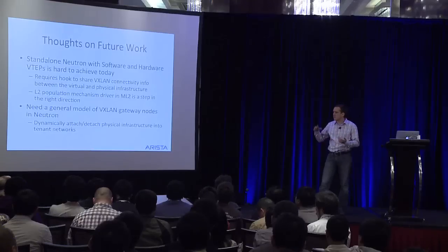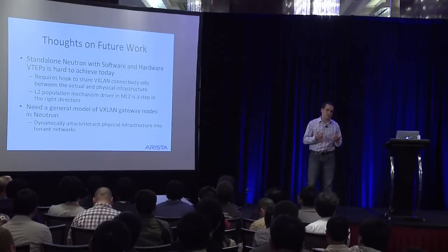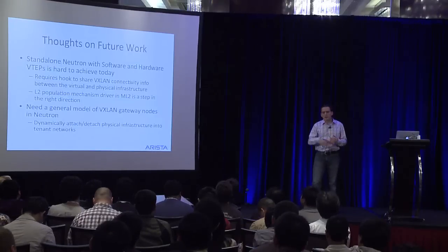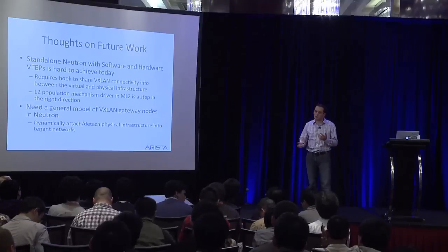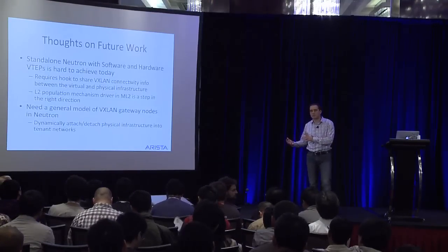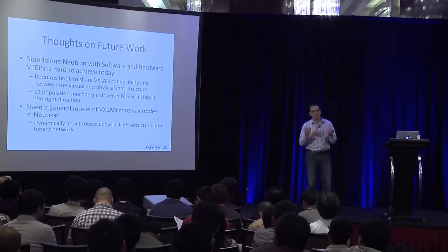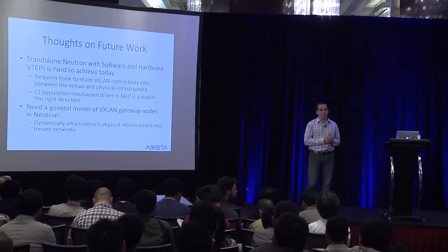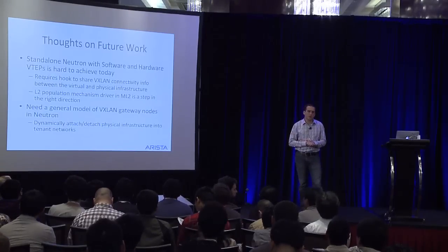One thing that's a little bit missing is a general model for VXLAN gateways within Neutron. The NSX solution has an extension that does this, but it kind of just needs to be generalized so you can dynamically add and map physical infrastructure into your virtual environments. Some of you may be saying this seems similar to Ironic and some other efforts going on within the community — there is some overlap there, and this is an area where things will probably evolve over time.